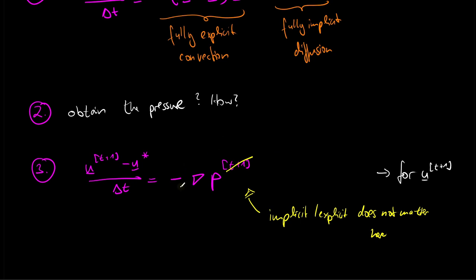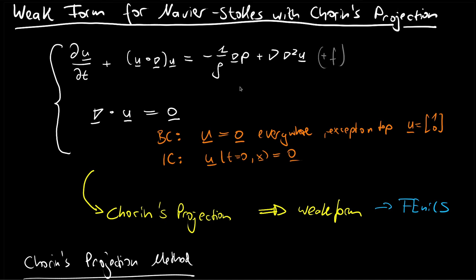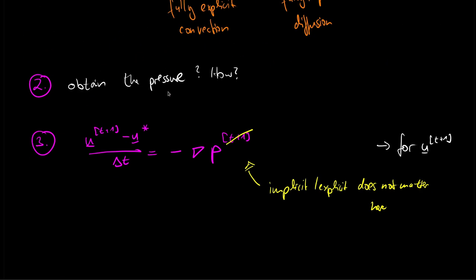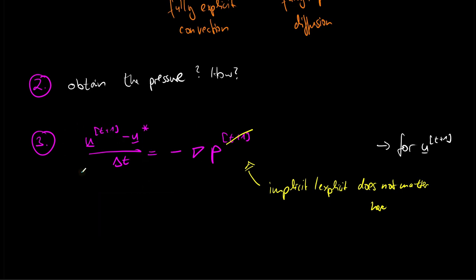The second step is to obtain the pressure. Chorin's idea is to take the divergence of the update equation (step 3) to find the pressure equation — which turns out to be a Poisson equation: the pressure Poisson problem. We find it by taking the divergence of the update equation.